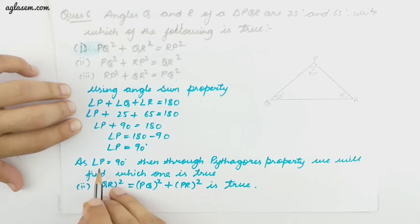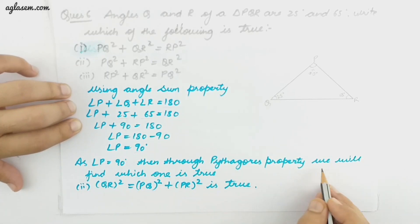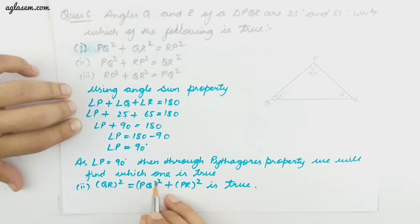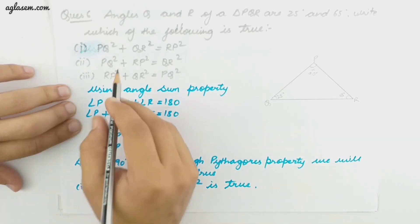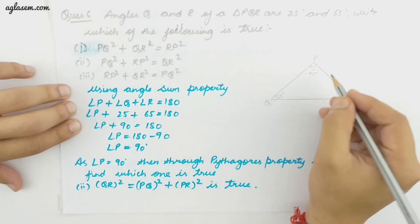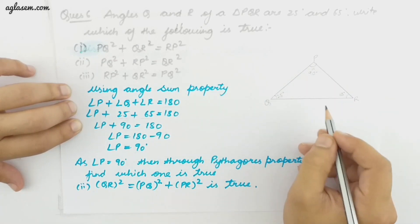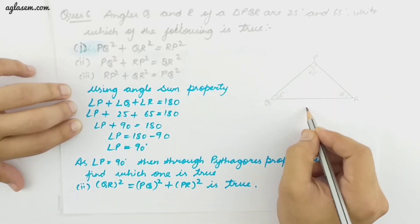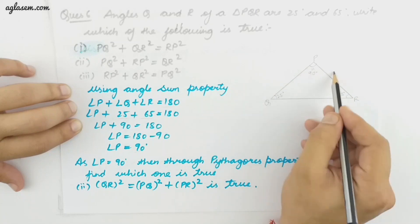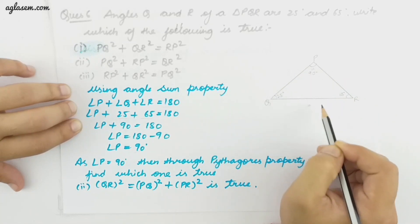Since angle P is 90 degrees, through Pythagoras property we find which option is correct. Option 2 is correct because QR is the hypotenuse in this diagram, and the other two sides are smaller than QR.